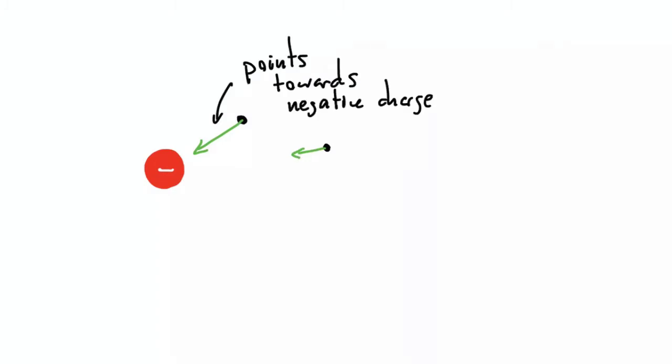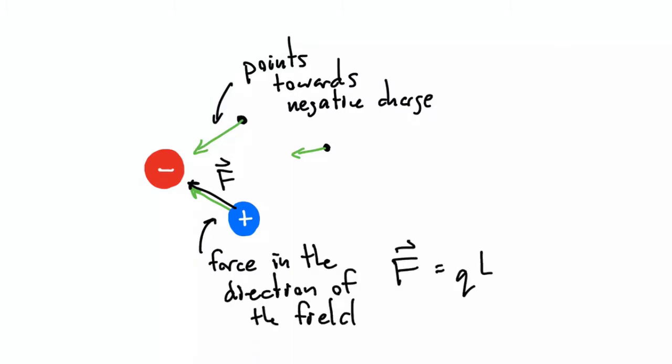Even though we only drew a few, there are arrows like this everywhere in space. It is actually this electric field that causes a force on other charges. If I place a positive charge in an electric field, the charge feels a force in the same direction as the electric field. If I place a negative charge, the force is in the opposite direction of the electric field.